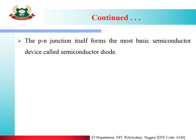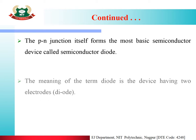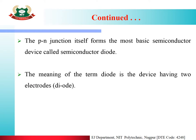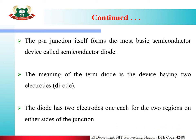The PN Junction itself forms the most basic semiconductor device called Semiconductor Diode. The meaning of the term Diode is a device having two electrodes — 'Di' meaning 2, so a device with two electrodes is called a Diode. The diode has two electrodes, one each for the two regions on either side of the junction.